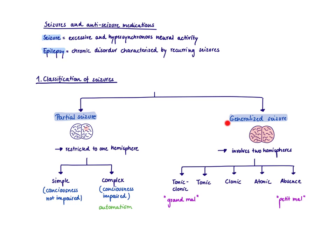Let's move on to the generalized seizure. It involves both hemispheres and we distinguish tonic-clonic, atonic, and absence seizures. The tonic-clonic seizures are also sometimes referred to as grand mal. Grand means French big and mal is malaise, so big disease. These tonic-clonic seizures are characterized by a tonic phase, meaning a stiffening phase where the whole body stiffens, and then a clonic phase with jerky movements, so contractions alternating with relaxations.